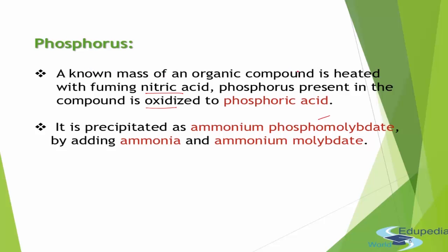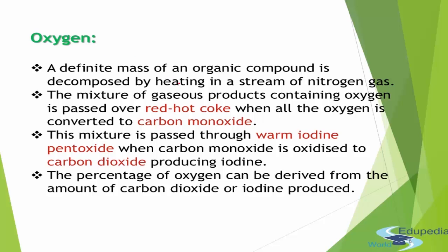For estimation of phosphorus, we take a known mass of organic compound and heat it with fuming nitric acid. The phosphorus present is oxidized to phosphoric acid. We then add ammonia and ammonium molybdate to get a precipitate of ammonium phosphomolybdate. We wash, filter, dry, and weigh the compound to find how much phosphorus was present in terms of percentage or in the formula, allowing us to identify the organic compound in the sample.